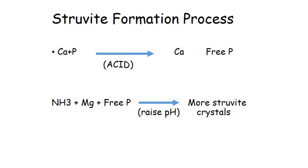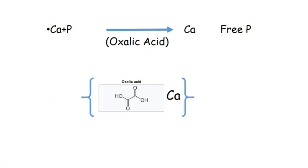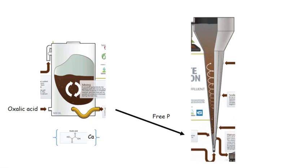Back to the struvite formation process: we add acid to break the calcium-phosphorus bond, free the calcium and the phosphorus, then raise the pH to get our struvite crystals. With oxalic acid, we're not only breaking this bond but also binding the calcium with oxalate. Our hope was that in the pre-treatment tank the calcium oxalate would settle out and not carry over into the cone, where it could grab back onto the phosphorus.